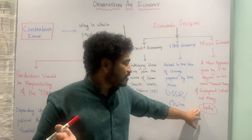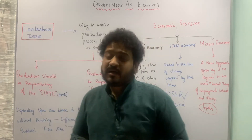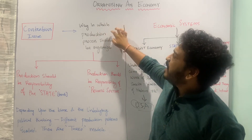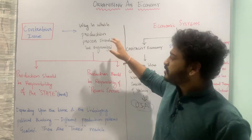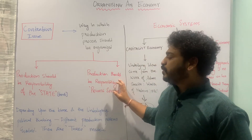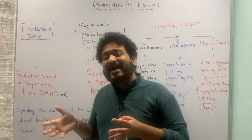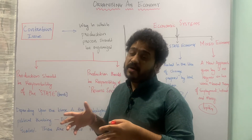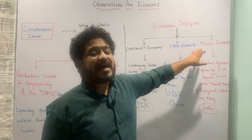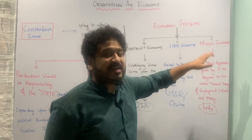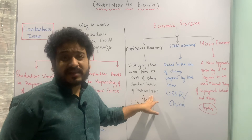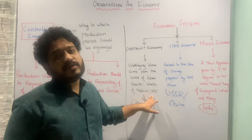This is how the economic systems evolved from a contentious issue of who will organize the process of production. There were two distinct views — the state alone or private individuals — and based on different times and socio-political contexts, three distinct economic systems emerged: the capitalist economy, the state economy, and the mixed economy. Each idea evolved from the work of a famous economist or philosopher.